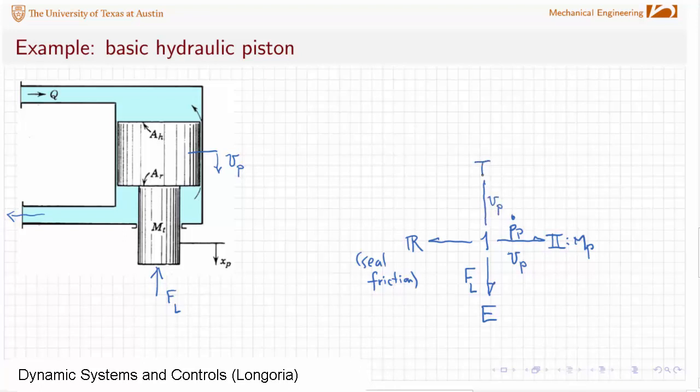So we know that the velocity of that piston, this is Vp here, through a transformer has to be related to what? If there's not going to be any leakage, then it has to be related to that Q through an area relation. We know that Q has to be equal to the area of the piston times the velocity of the piston.